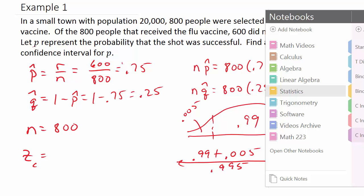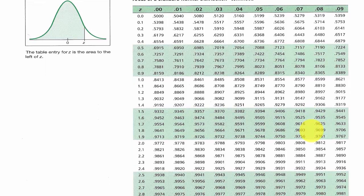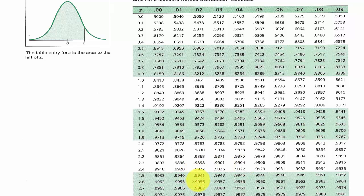Let's pull up the standard normal curve. Alright, so it was 0.995. That's what we're looking for. Let's find 0.995. So you can see that it's right around in here somewhere. There's not exactly a 0.995; here's 0.9951 and 0.9949.